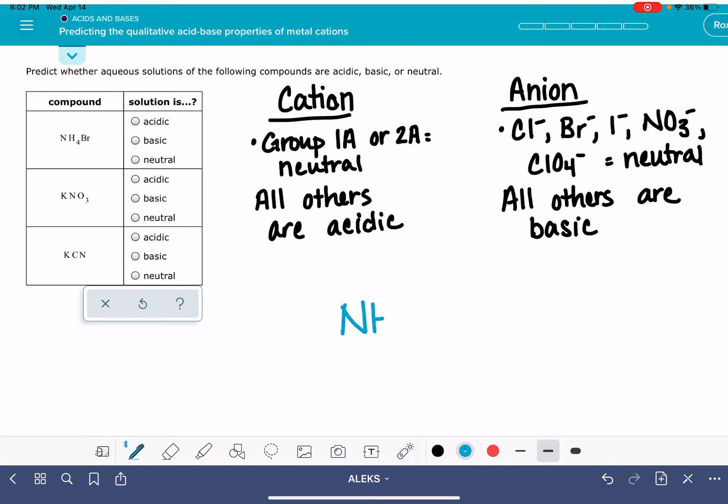So for our first one on here, I'm just going to write it larger. We have NH4Br, this first guy right here. In order to determine whether this is acidic or basic or neutral, we have to recognize which part of this is the cation and which part is the anion. It might be helpful for you to review the table of polyatomic ions when you're doing this. That will help you find those polyatomic cations and anions.